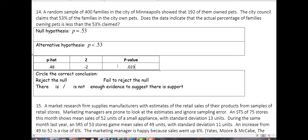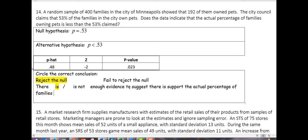With a P-value of 0.02, we actually got something exciting and interesting. We reject the null. There is enough evidence to support that the actual percentage of families that own a pet is less than 53 percent.